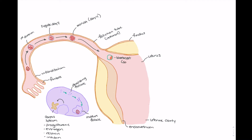Blastocyst formation occurs around day five, and there are important endometrial changes occurring around this time as well. With progesterone and estrogen release, we see differentiation of the endometrial cells, and as they grow we start to see cavity formation. This cavity serves as an area in which the blastocyst can rest and implant into the endometrium.